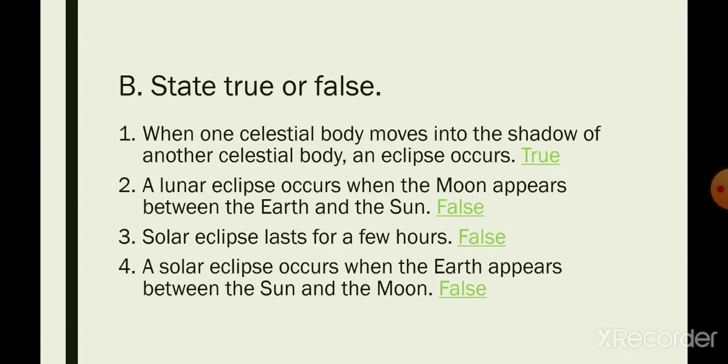Three: solar eclipse lasts for a few hours. False. Number four: a solar eclipse occurs when the Earth appears between the Sun and the Moon. False.